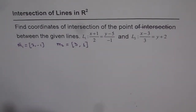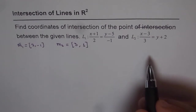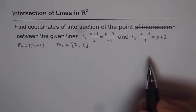This is important to check before you even start the solution. At times you may have situations where the lines may be collinear or parallel. Now to solve this, it is better to change the form to parametric form and then equate the x and y coordinates.